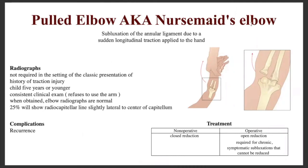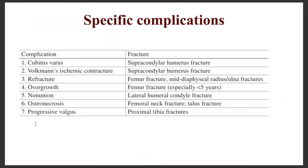The last condition is nursemaid's elbow. Applying a sudden longitudinal traction on the hand causes subluxation of the annular ligament of the child. X-ray is usually not needed if the history is clear of a traction injury, the child is less than 5 years old, and there is a consistent clinical examination — the patient refuses to use the injured arm. Treatment is non-operative with closed reduction unless there are chronic symptoms or inability to perform closed reduction.